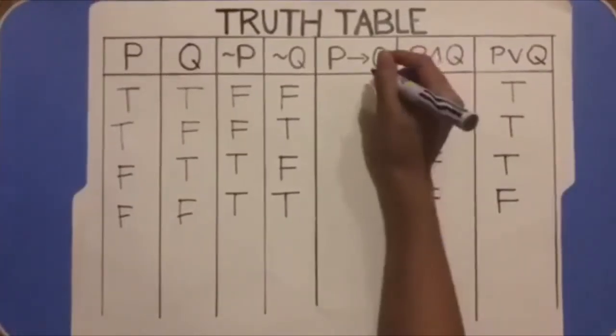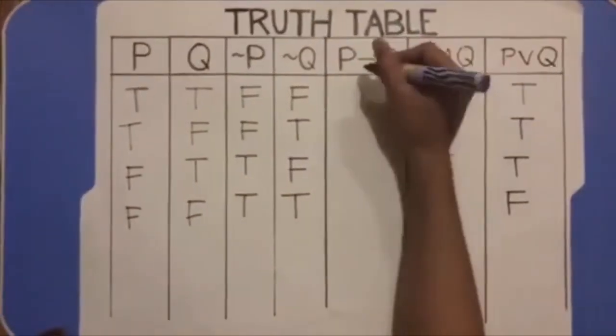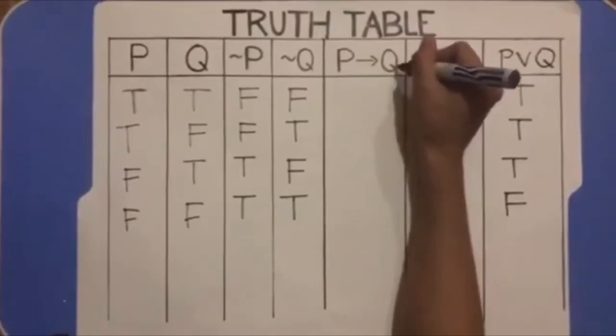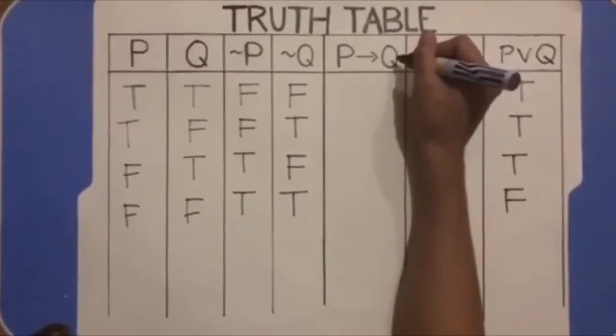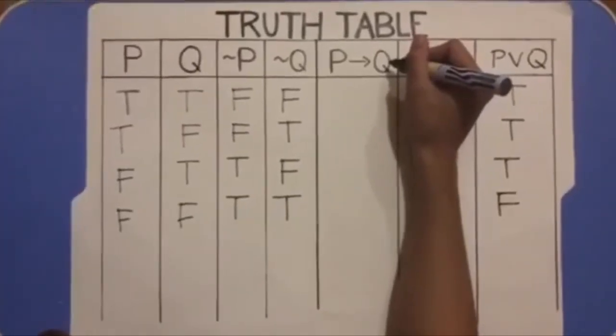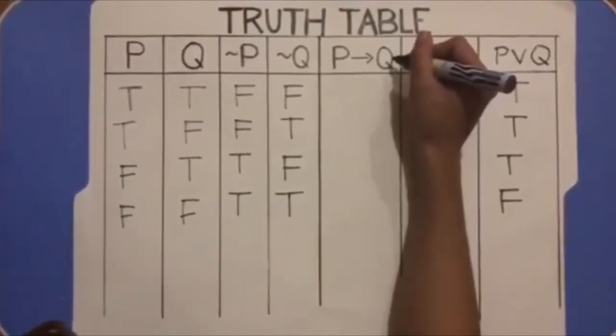In the fifth column, P equivalent Q is true if P and Q are both true or if P and Q are both false, otherwise the double implication is false.